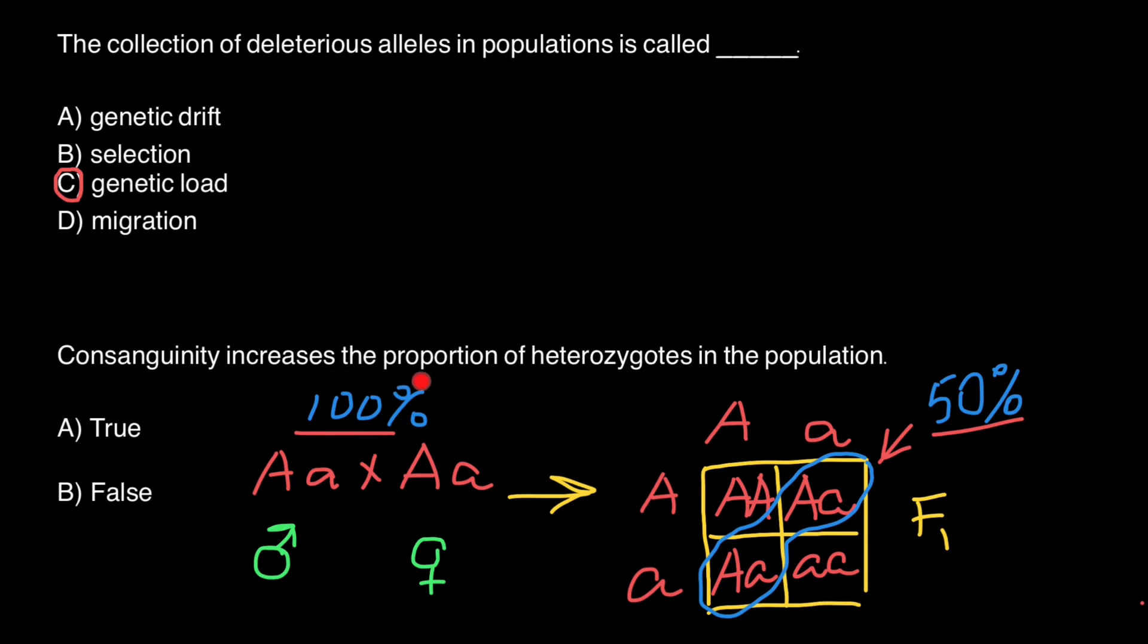Consanguinity increases the proportion of heterozygotes in the population. Now you know that this is a false statement.